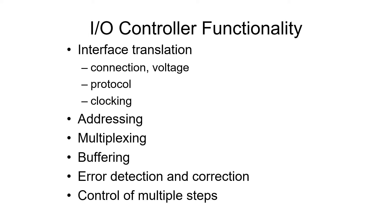Buffering is the saving of information between the devices. The bus runs very quickly. So if the I/O controller is going to send information to a relatively slow device, it will read a block of information from memory across the bus and then feed it out to the device at a speed the device can handle. I/O controllers also detect any errors that the device may produce and possibly correct them. In some cases the controller will retry or correct an error; in other cases it will simply inform the CPU that an error has occurred.